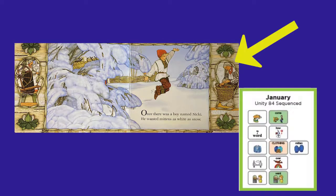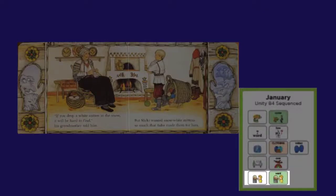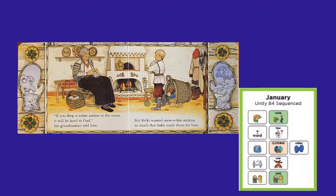That's a clue about what's going to be on the next page. If you drop a white mitten in the snow, it will be hard to find, his grandmother told him. But Nicky wanted snow white mittens so much that Baba made them for him. That's his grandma — he calls her Baba. He said, I want white mittens, so she's going to make them for him. Do you think white mittens are a good idea?